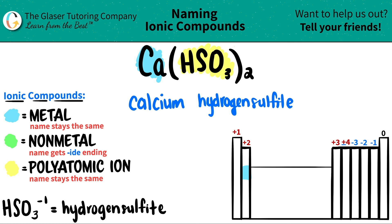And you're done. Now, just check to see if you need a Roman numeral. But since calcium is not a transition metal, you don't need one. So we're good.